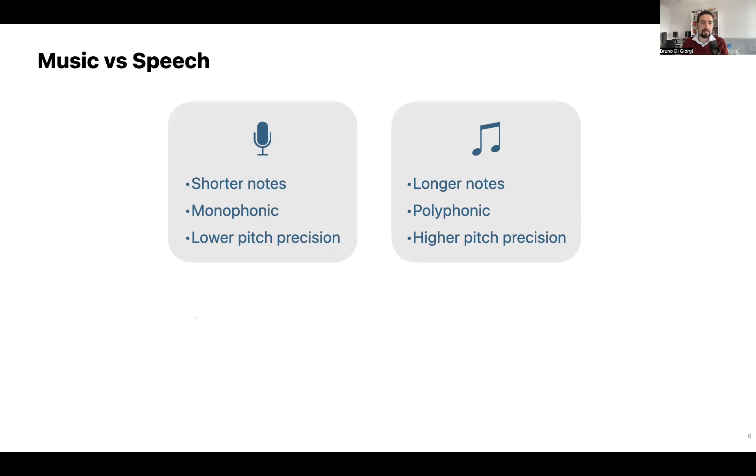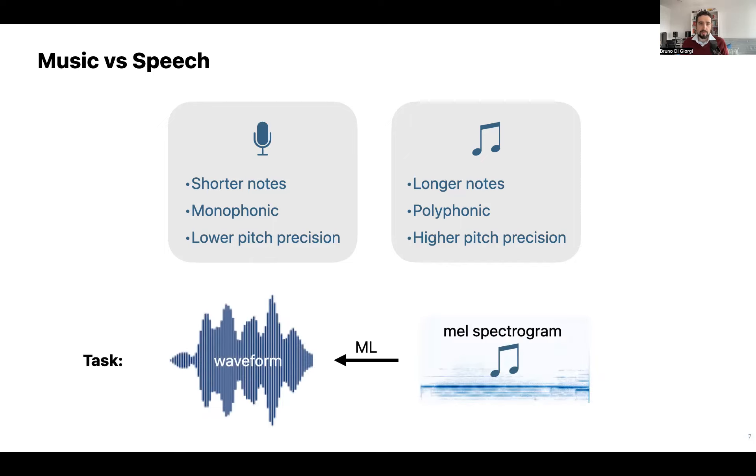However, there are important differences between speech and music signals. In particular, with respect to speech, music signals usually can have longer notes, can be polyphonic, and generally require higher pitch precision. For these reasons, we set out to try and find if we could design a Mel spectrogram inversion model specifically for music.